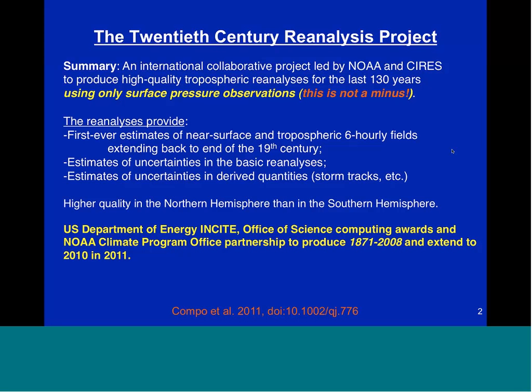What we're producing are the first-ever estimates of the near-surface and tropospheric six-hourly fields extending back to the end of the 19th century — results going back to 1871. Because we're using an ensemble system, you get estimates of uncertainties in the basic reanalysis fields at every grid point, for every time, for every variable, and you can also estimate uncertainties in derived quantities such as storm tracks.